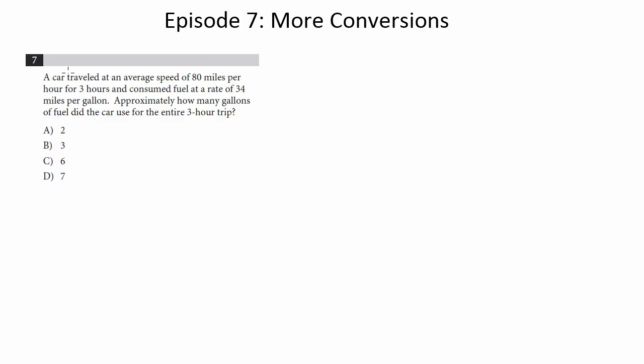So first, the intuitive way. A car traveled at an average speed of 80 miles per hour for three hours and consumed fuel at a rate of 34 miles per gallon. Approximately how many gallons of fuel did the car use for the entire three hour trip?